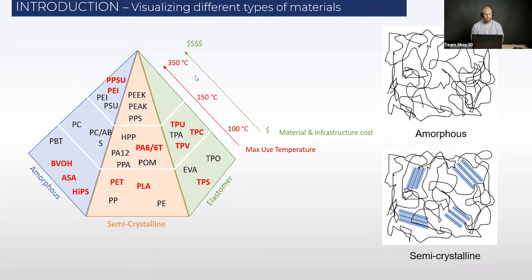Hey Nate, what would you say is the main difference — you categorize these as amorphous, semi-crystalline, and elastomer. What does that actually mean in terms of the filaments? And what properties are exhibited by amorphous materials, for example, versus a semi-crystalline material?